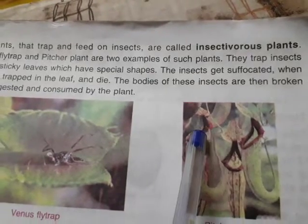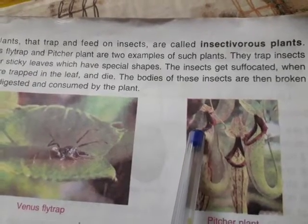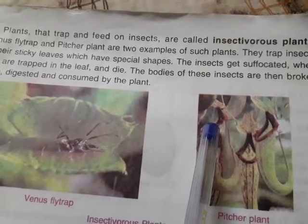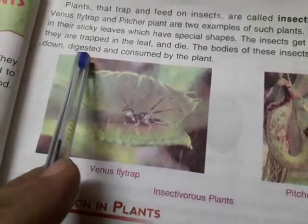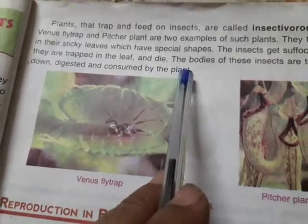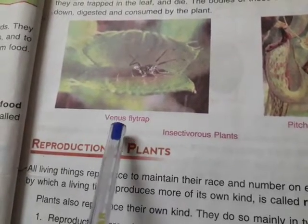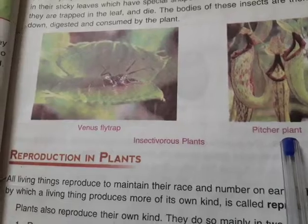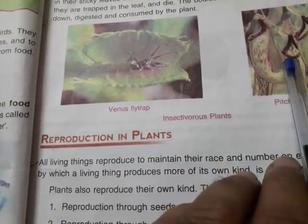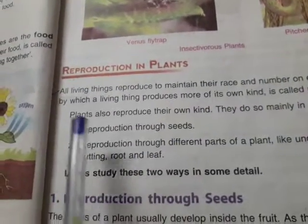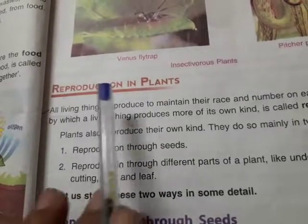After the insect's death, the plant absorbs protein and other nutrients present in the insect body. The body of the insect is broken down, digested, and consumed by the plant. So you have to remember that some plants like the Venus flytrap and pitcher plant get extra food from insects. Plants need food for energy, so plants are living things.